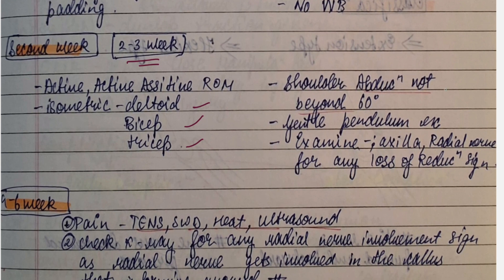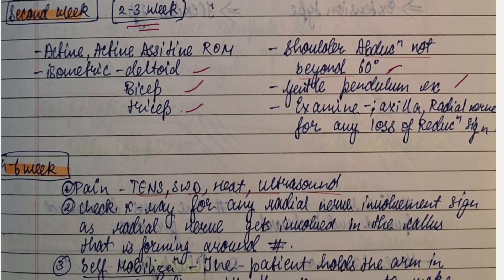In second week, that is second to third week, shoulder abduction should not be beyond 60 degrees. Gentle pendulum exercise. We have to examine axilla and radial nerve injury if there is any signs or any loss of reduction sign.